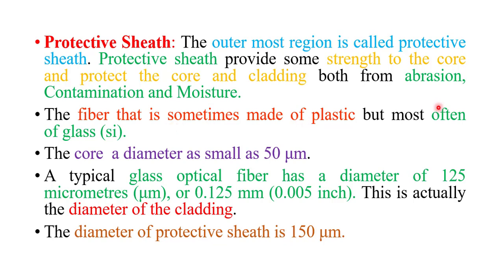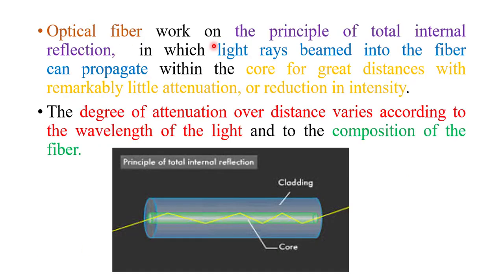The fiber is sometimes made up of plastic. Glass fiber is more transparent than plastic fiber, but plastic fiber is more flexible and durable. Plastic fiber is not used in communication due to low transparency, while glass fiber — having more transparency and lower losses — is used in communication. For glass fiber, silica is used; for plastic fiber, PMMA and polycarbonate materials are used. The core diameter is 50 micrometers, cladding diameter is 125 micrometers (0.125 mm), and the protective sheet diameter is 150 micrometers. Optical fiber works on the principle of total internal reflection, in which a light ray entering the fiber can propagate over long distances without attenuation from the side walls. The degree of attenuation varies according to the wavelength of light and the composition of the fiber material.